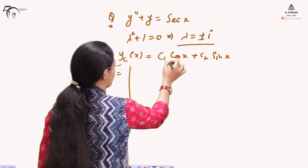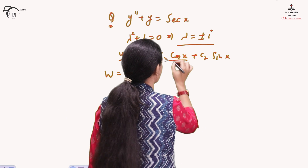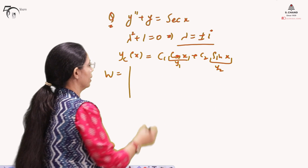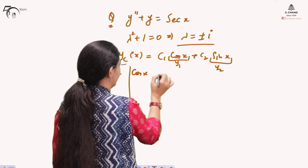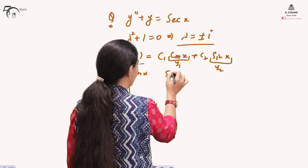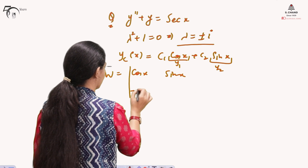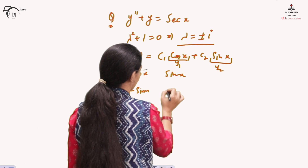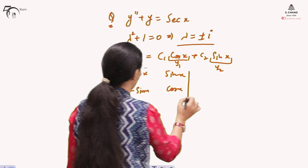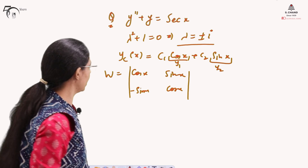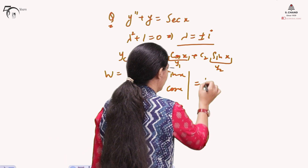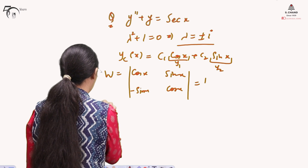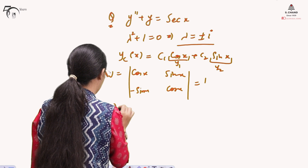The Wronskian for this case is computed with y₁ = cos(x) and y₂ = sin(x). The derivative of cos(x) is −sin(x) and the derivative of sin(x) is cos(x), giving cos²(x) + sin²(x) = 1. So the Wronskian equals 1, and yp(x) is written using the variation of parameters formula.